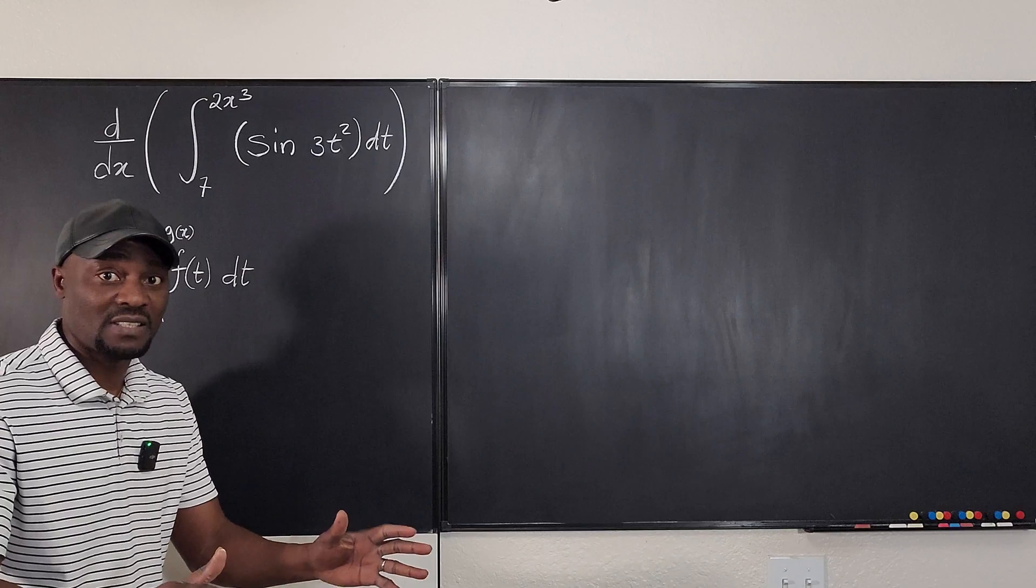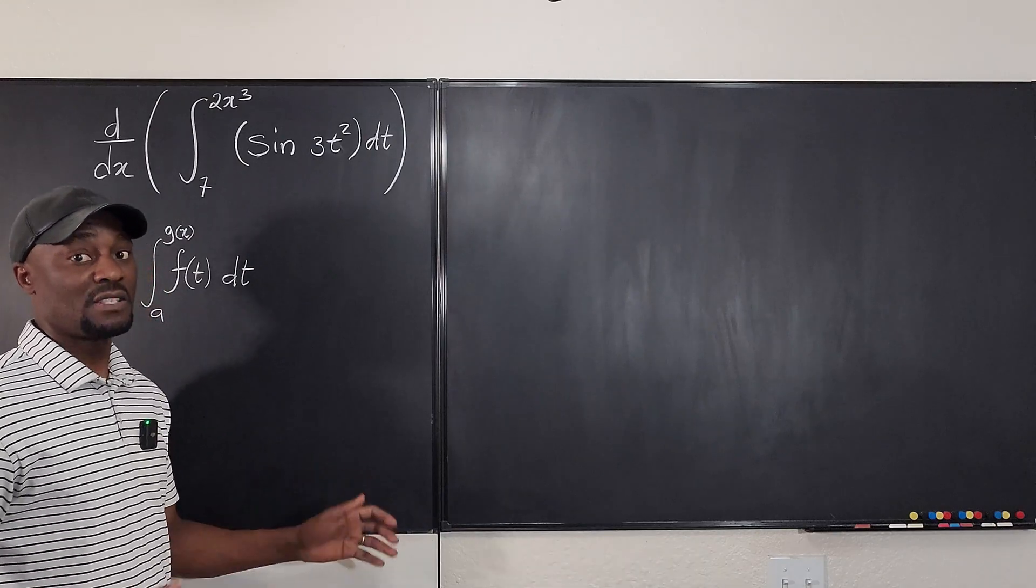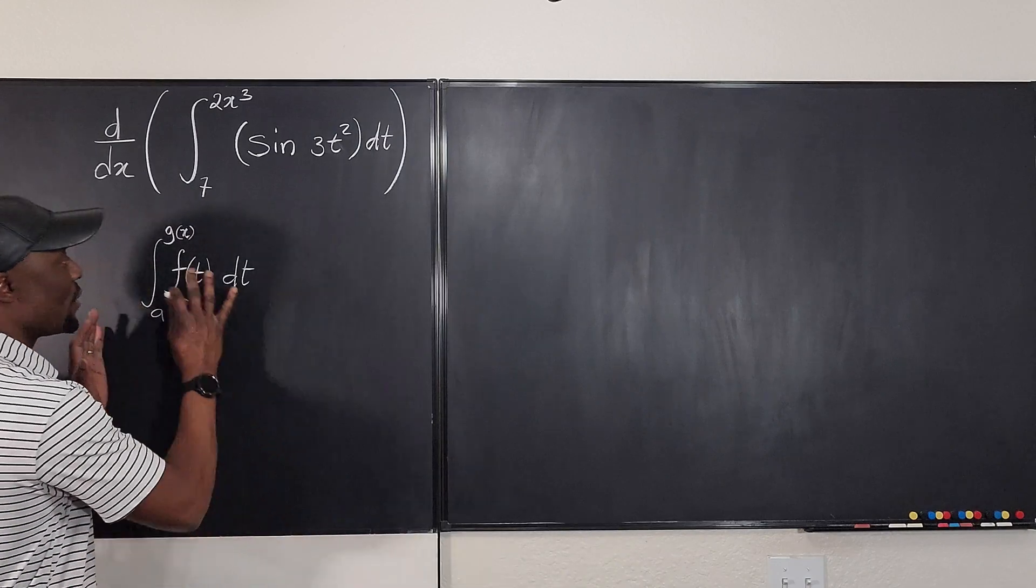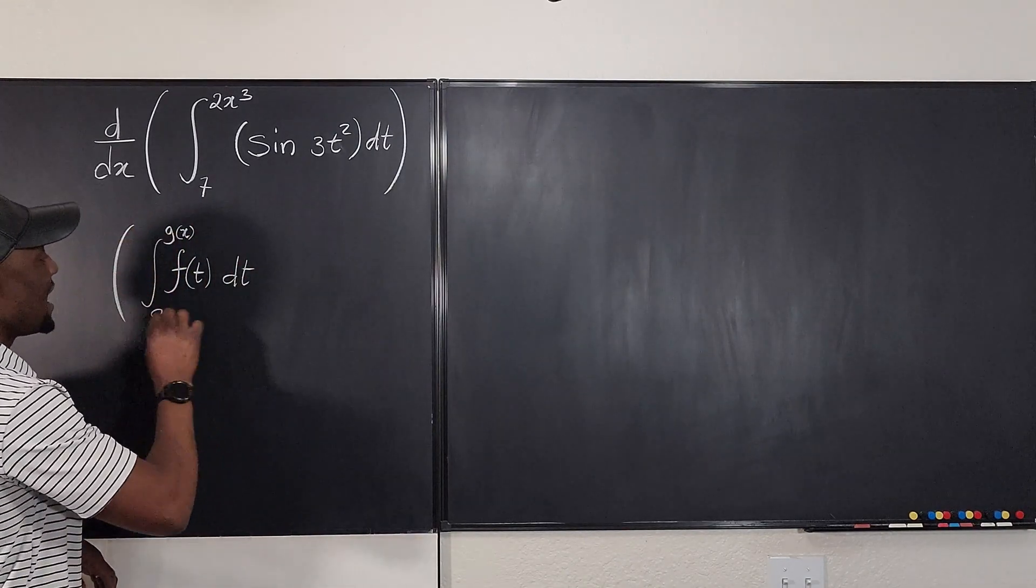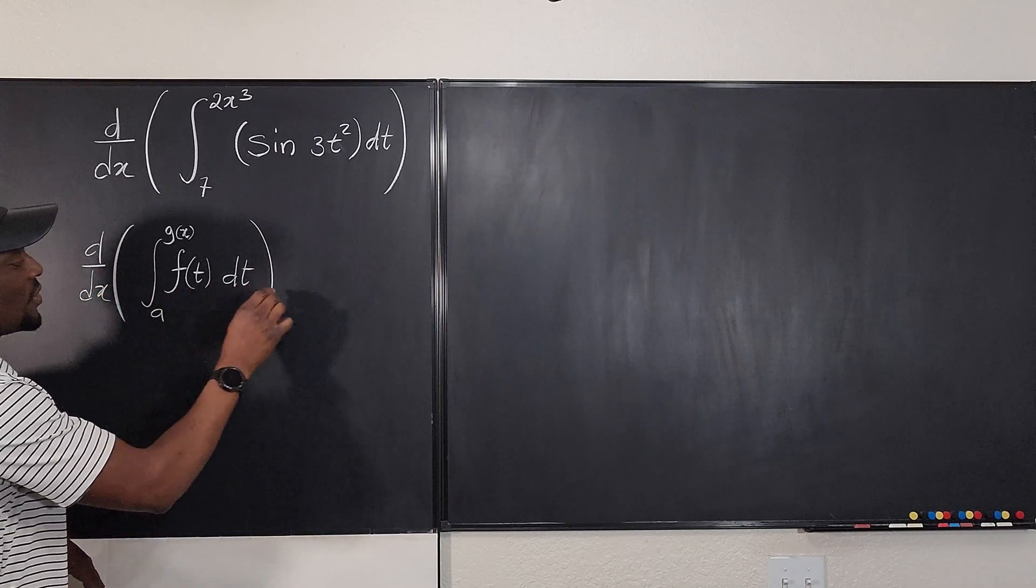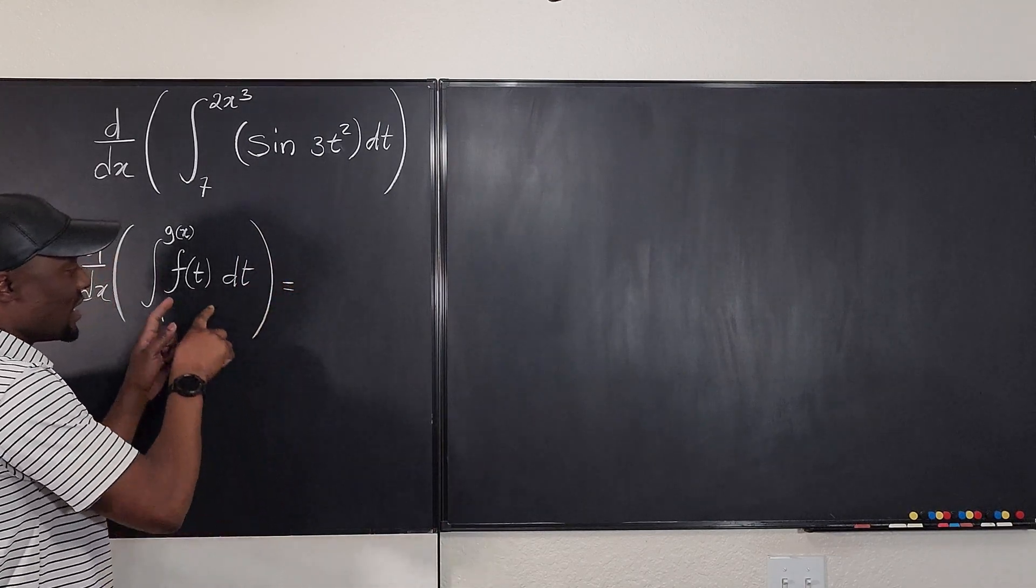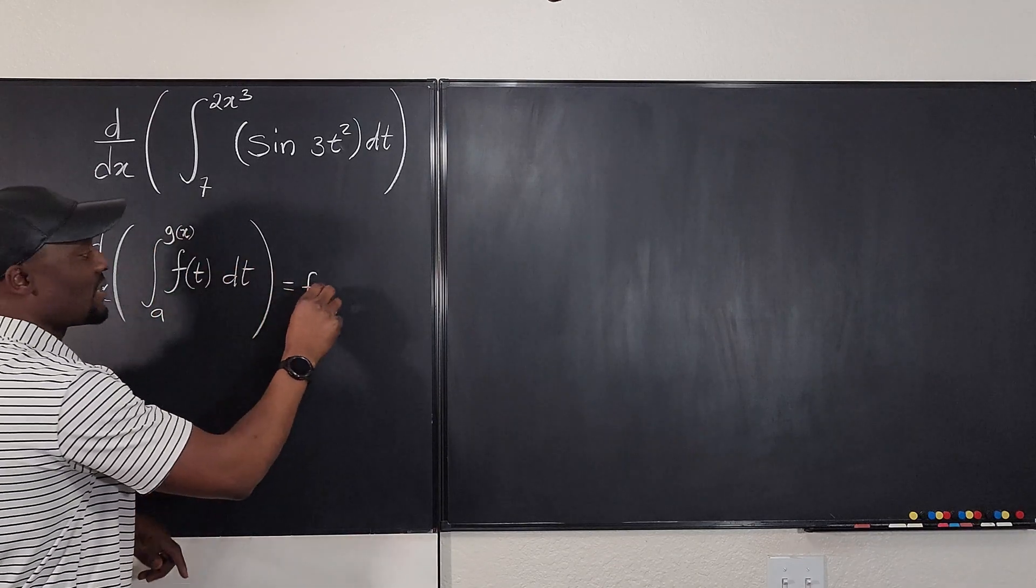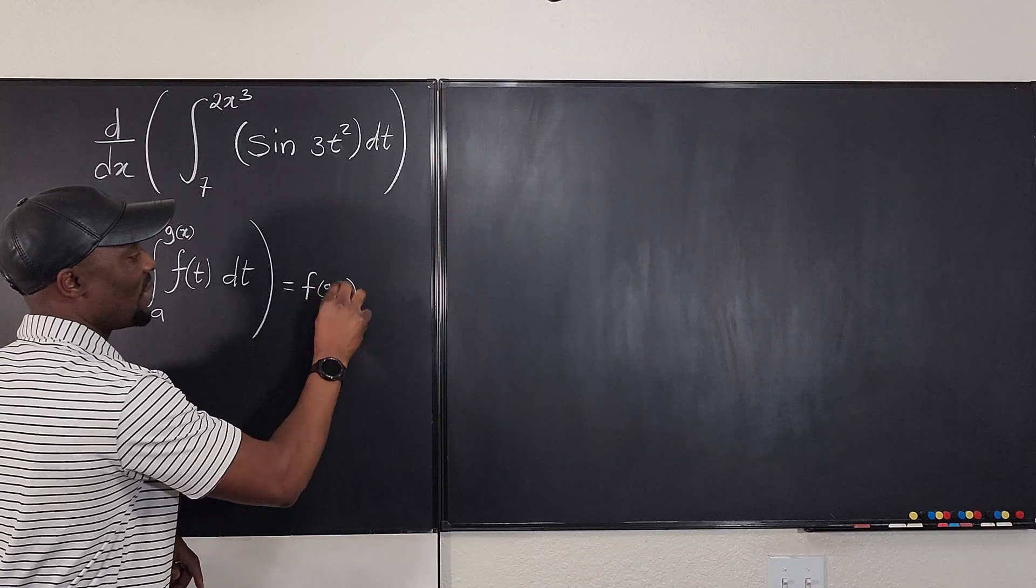Remember, this g of x could be x, could be just x, it could be x squared, could be x minus 5, could be, as long as it's a function of x. Once you have this expression, if you take the derivative of this, all you're gonna get will be this function but now in terms of g of x...